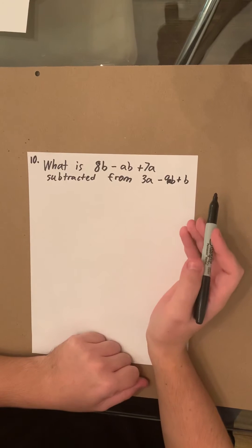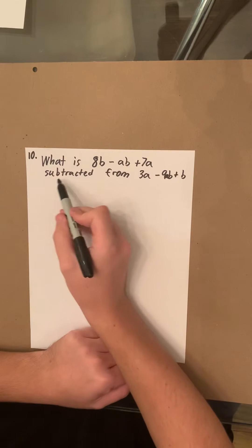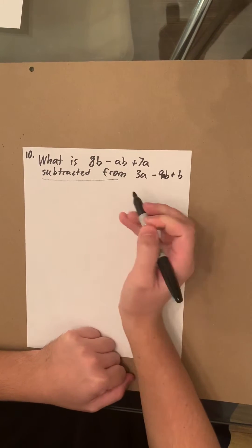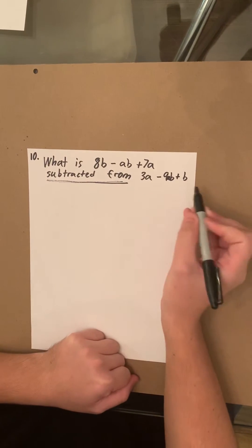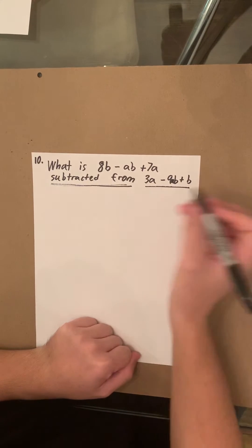They kind of trick you up with the wording here. By putting this number first, you would assume it goes on top. But what they mean by subtracted from is that this is actually going to be the bigger number.